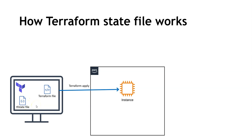That's the reason we need to maintain the Terraform state file in a secure location. That's where the backend comes into the picture. There are multiple backends available — for AWS you can use S3, for Azure you can use Azure Blob Storage, or you can use HashiCorp Cloud. Since we're using AWS, we'll use an S3 bucket as our remote backend. We need to provision an S3 bucket first.